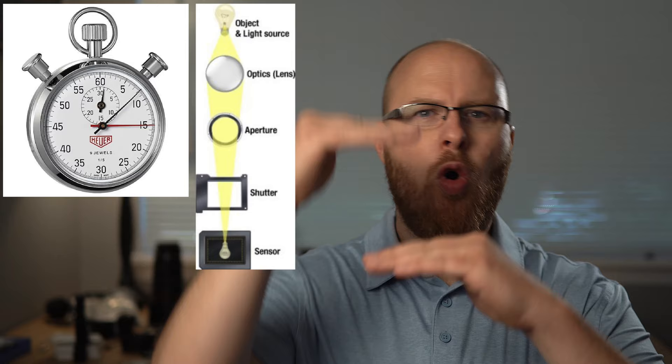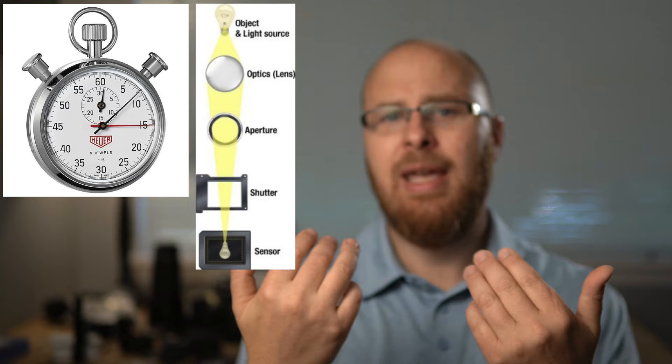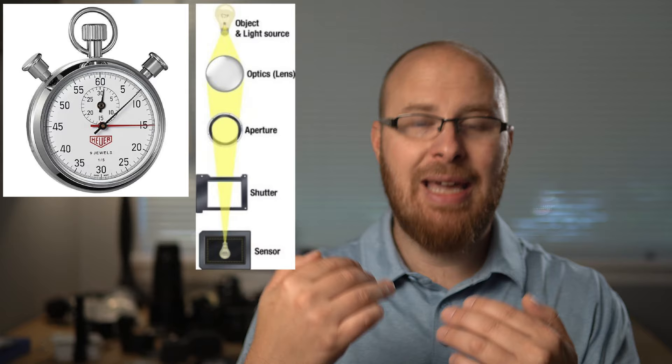Moving on to shutter speed — think of shutter speed as time, like a clock going around. When your shutter opens, it exposes the sensor to light. The longer the shutter is open, the more light reaches the sensor and the more motion blur you'll get. If the shutter is open for one full second and something walks past, that's going to be blurry because the shutter was open that whole time.